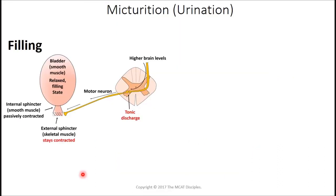Micturition is the medical term for urination. I want to first talk about the innervations to the bladder as well as the muscles involved in holding fluid within the bladder. We have the bladder itself, and the inner portion of its muscular structure is smooth muscle while the outer portion at the rim is skeletal muscle. As you know, smooth muscle is under autonomic control — particularly parasympathetic or sympathetic — while the external sphincter is under volitional or voluntary control.